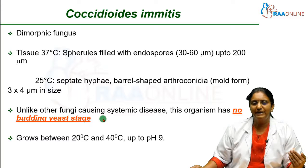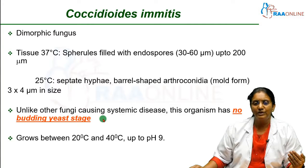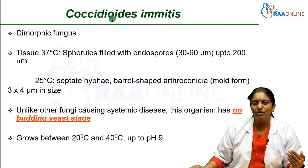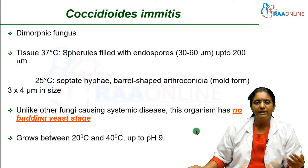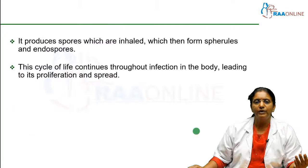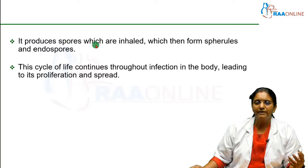This organism does not have a budding yeast stage, unlike the other three. Coccidioides does not have a budding yeast state. It can grow anywhere between 20 to 40 degrees centigrade and can grow at a highly alkaline pH of up to 9. Those arthroconidia fragment and are released as spores, which become airborne and can get inhaled.